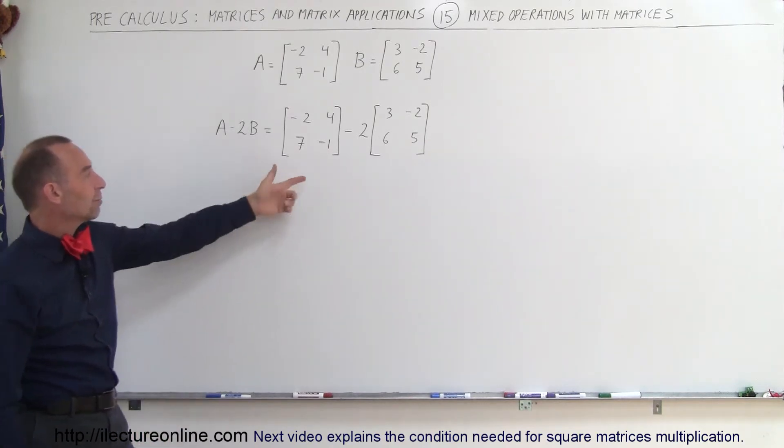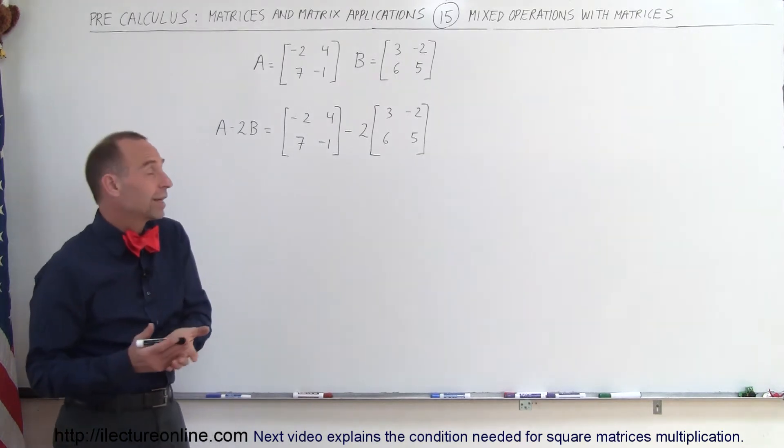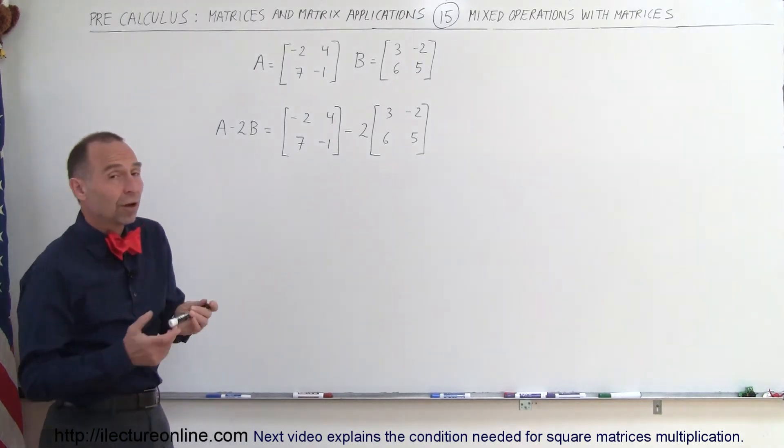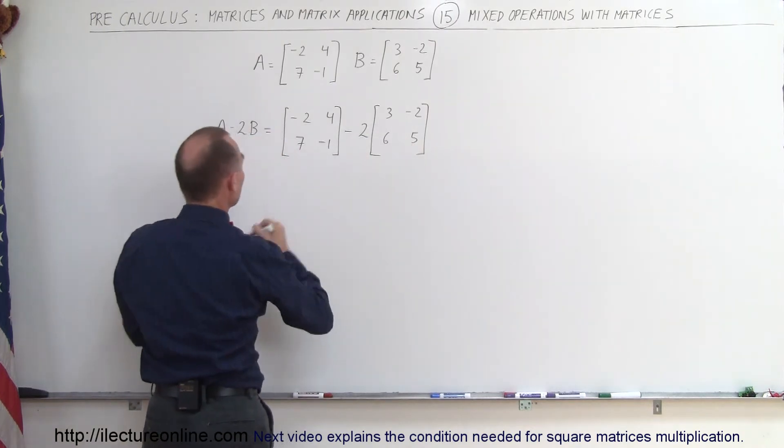This is how we write it out. Here's matrix A minus 2 times matrix B. Now there's a number of approaches we can take but what we could probably start with is simply multiplying the matrix B by 2 and we get the following when we do that.